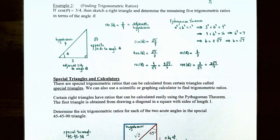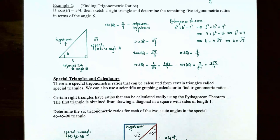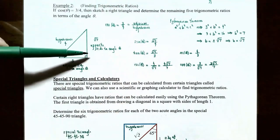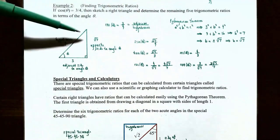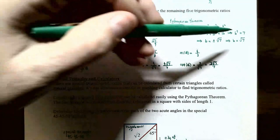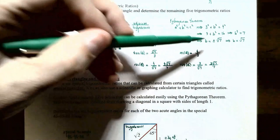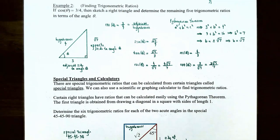The Pythagorean theorem states A² + B² = C², where C is the hypotenuse. Setting A = 3 and C = 4: 3² + B² = 4², so 9 + B² = 16, giving B² = 7. Taking the square root of both sides, B = ±√7. Since we're talking about a side length, B must be the positive √7. So the opposite side has length √7.